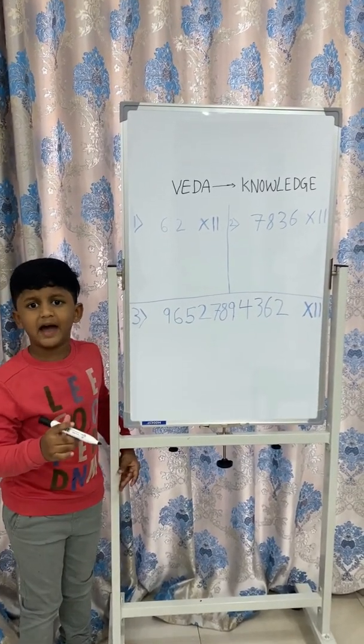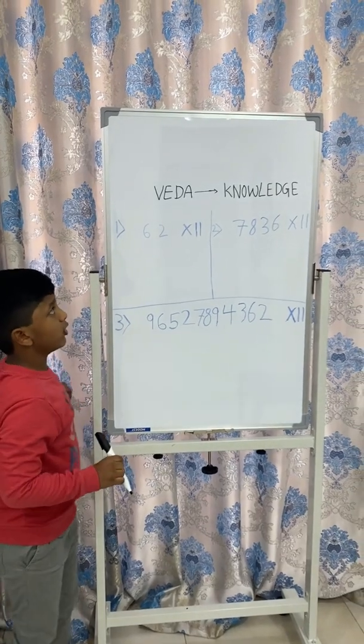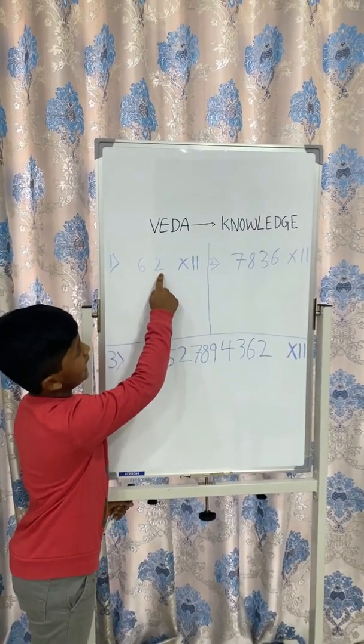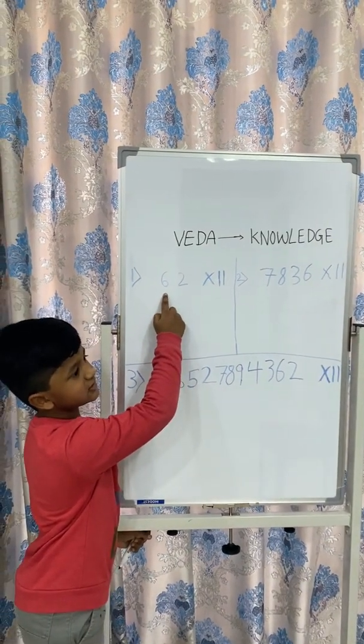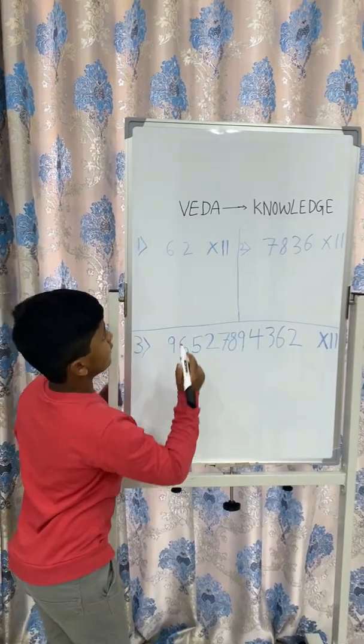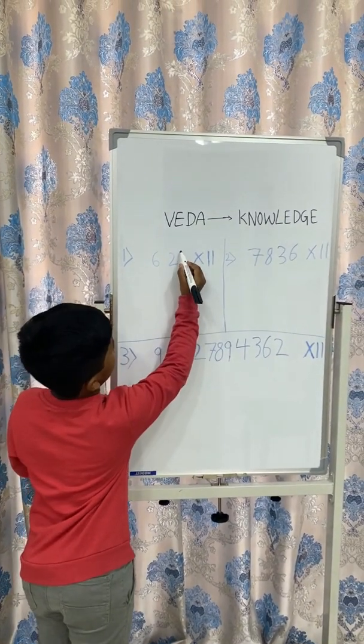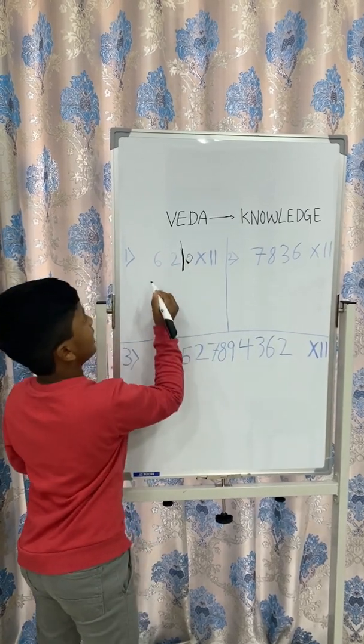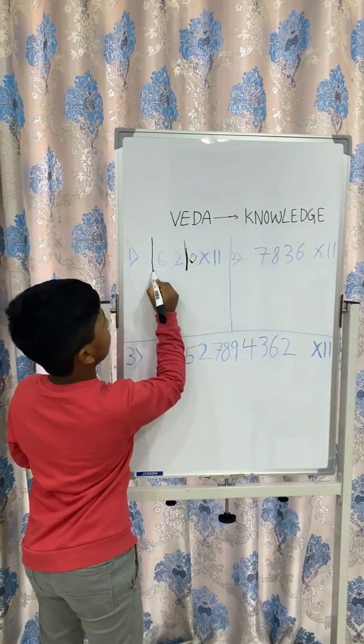Always remember that you should always start the calculations from the right side and proceed towards the left side. Let's see how to do these sums. First, you will add 0's at the end of the sum and at the beginning of the sum.